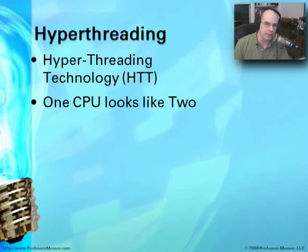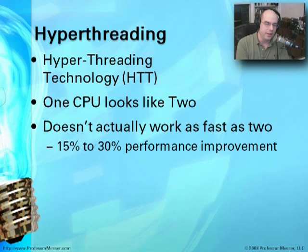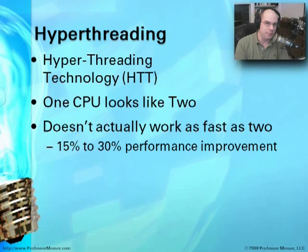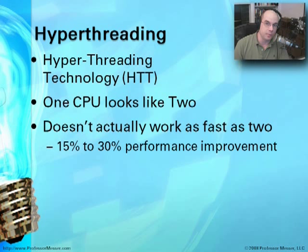I have a single laptop, but because my CPU supports hyper-threading, my Windows operating system sees two processors. But let's not be fooled — the processor doesn't act as fast as two individual processors; we have the laws of physics to deal with. It does increase throughput and efficiency when both are working in tandem, and you'll see a 15% to 30% improvement in how quickly and efficiently that CPU operates.